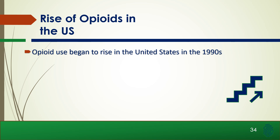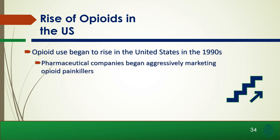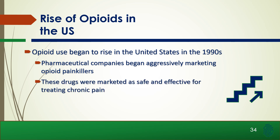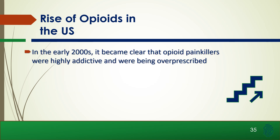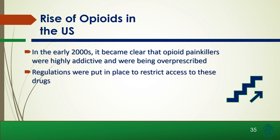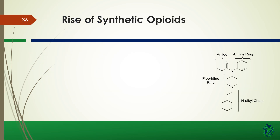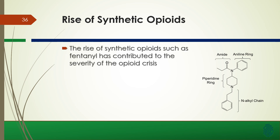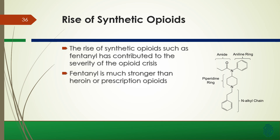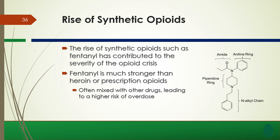Pharmaceutical companies began aggressively marketing opioid painkillers, which were marketed as safe and effective for treating chronic pain. In the early 2000s, it became clear that these opioid painkillers were highly addictive and were being overprescribed. Regulations were put in place to restrict access, and addiction to prescription opioids turned to heroin. That led to the rise of synthetic opioids such as fentanyl, which is much stronger than heroin and prescription opioids and is often mixed with other drugs, leading to a much higher risk of overdose.